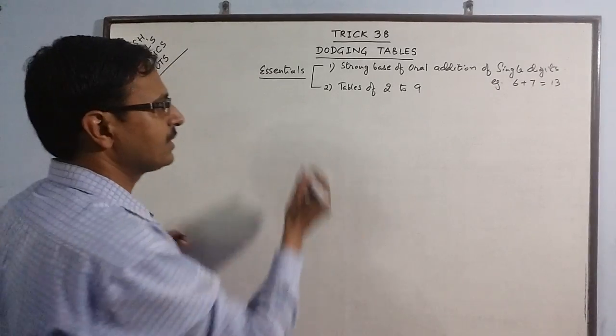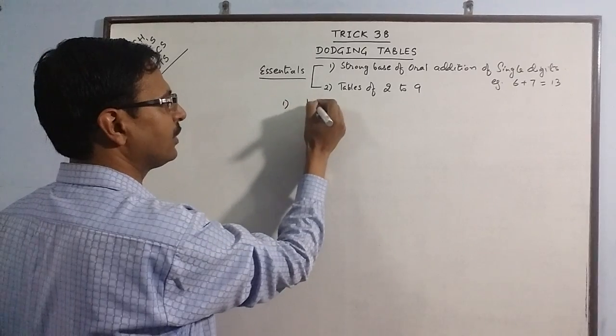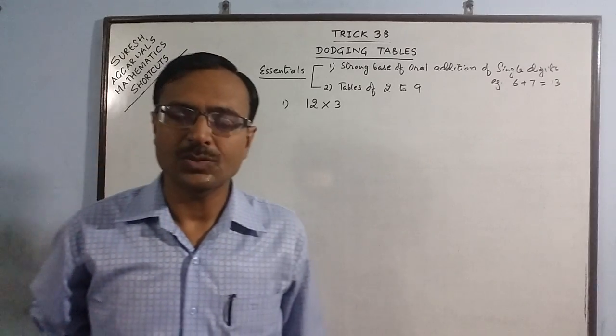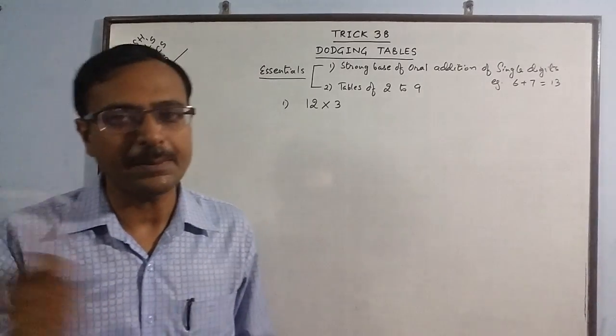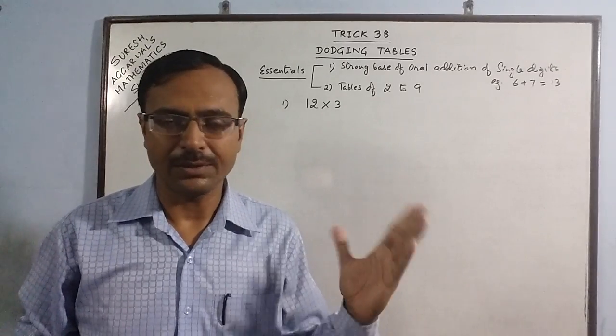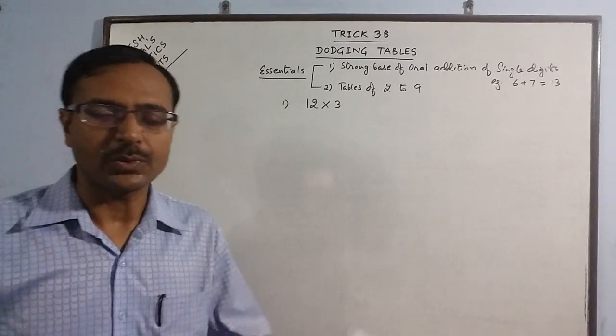The first example which I am taking is a very small example of 12 multiplied by 3. If the child is asked what is 12 times 3, he starts counting the table: 12 ones are 12, 12 twos are 24 and so on.